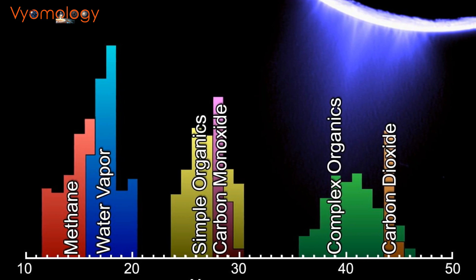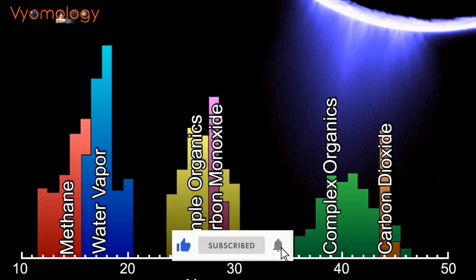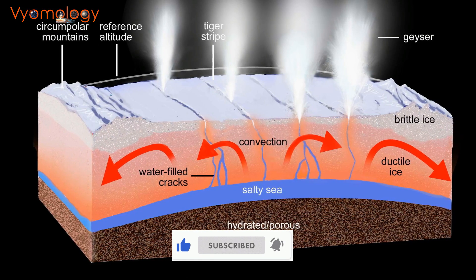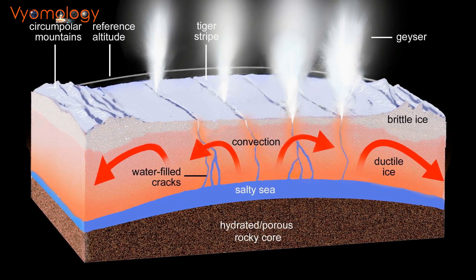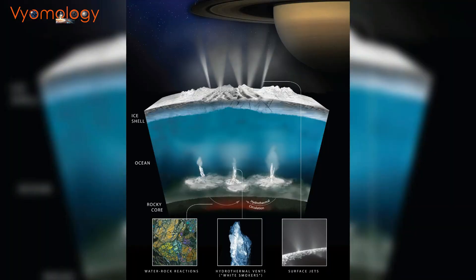Enceladus boasts a rich chemistry resembling life's building blocks. Amino acid precursors, ammonium, and hydrocarbons paint a canvas of potential biochemistry. Could Enceladus support methanogenesis?